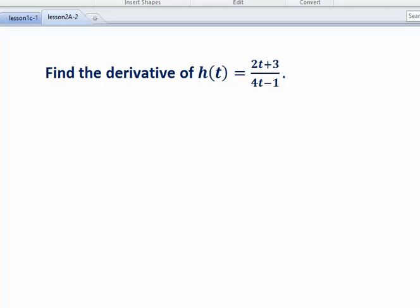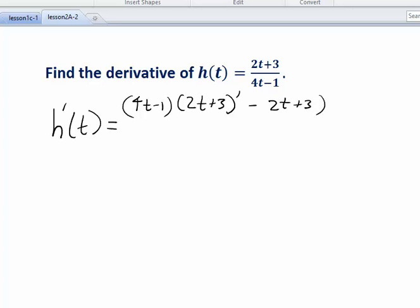Suppose we need to find the derivative of this function, 2t plus 3 over 4t minus 1. Well, according to the quotient rule, the derivative, h prime of t, is going to be the bottom function times the derivative of the top function minus the top function times the derivative of the bottom function, all divided by the bottom function squared.